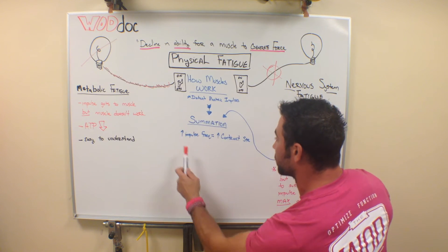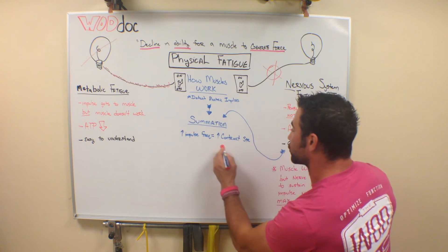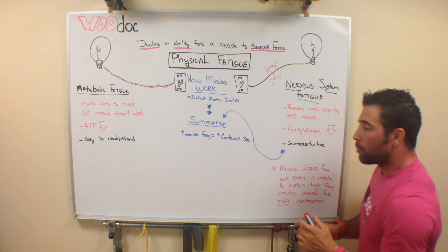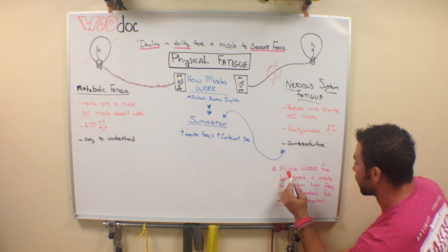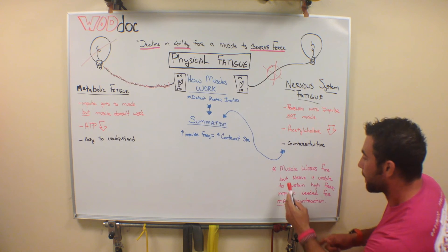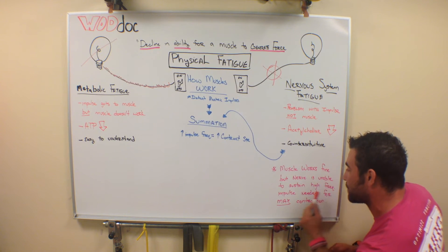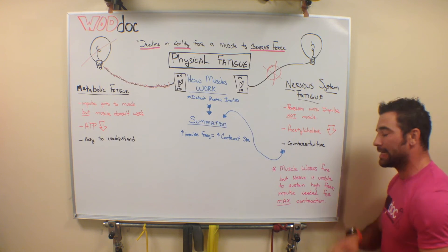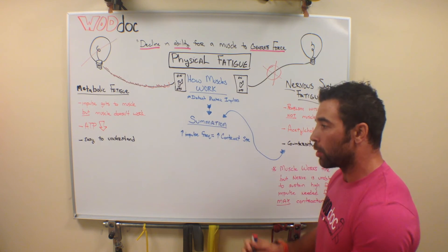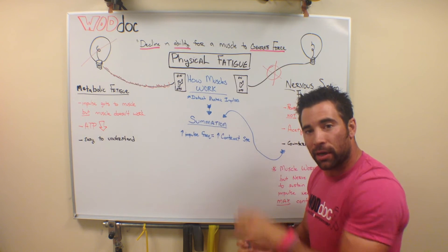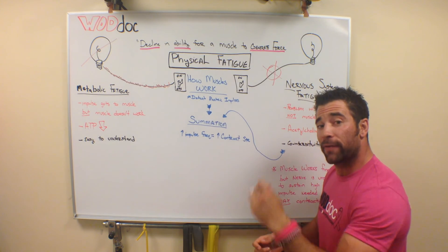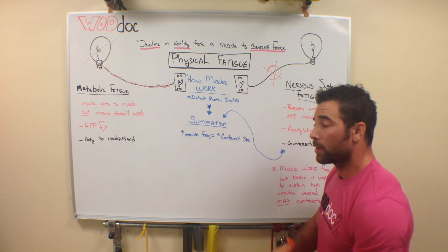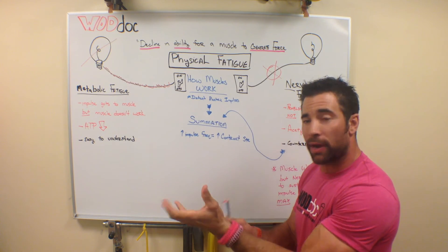The higher the impulse frequency, the higher the contraction strength. So when we talk about nervous system fatigue, what we have is the muscle works fine, but the nerve itself is unable to sustain the high frequency impulse needed for max contraction. So it's almost like turning the dimmer switch on. There's not a high enough frequency of continual stimulation for the muscle to reach its maximal contraction.